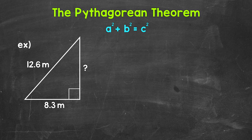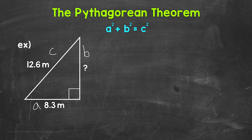Let's jump into our example where one of the legs is given — that's 8 and 3 tenths meters — and then the hypotenuse is given, that's 12 and 6 tenths meters. We need to find the length of the missing or unknown leg. Let's make this leg a, this leg b, and the hypotenuse is c. So we use a squared plus b squared equals c squared.